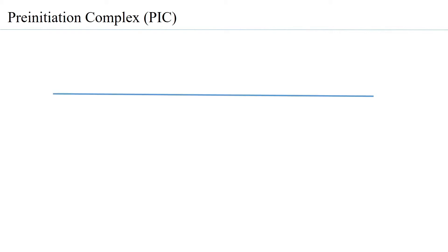The pre-initiation complex formation is what we begin with first. At the core promoter region of RNA polymerase 2, there are certain cis-acting elements that play a very important role in the formation or assembly of the pre-initiation complex.